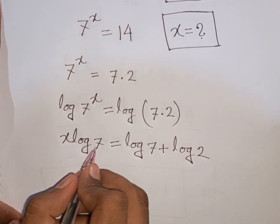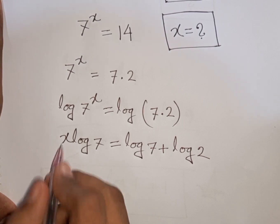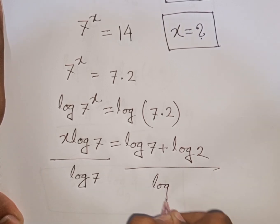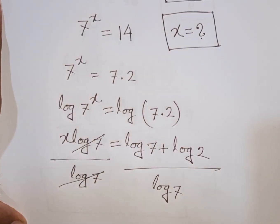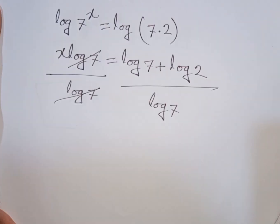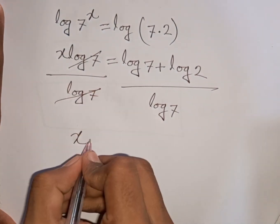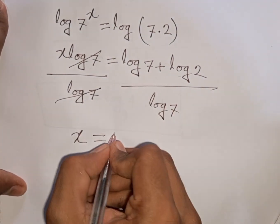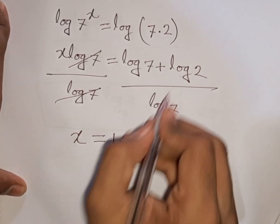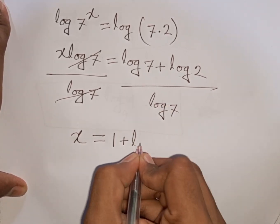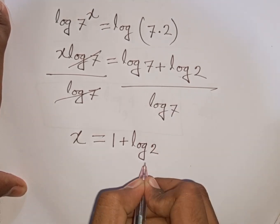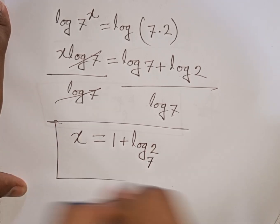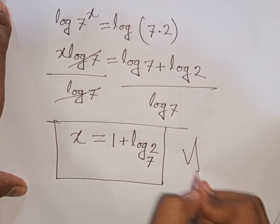Now we divide both sides by log 7 because we need the value of x. So log 7 divided by log 7 cancels, giving x = log 7 over log 7 plus log 2 over log 7, which means x = 1 + log₇(2). So this is our final answer.